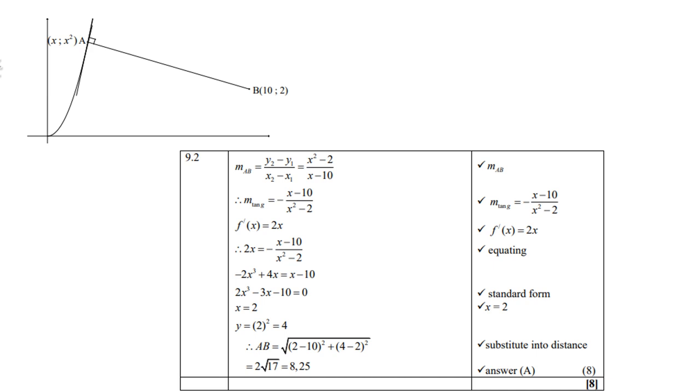Then we differentiate the given function. It gives you 2x. Now remember, derivative is gradient. That is why I can equate the 2. So 2x equals negative (x minus 10) over (x squared minus 2).